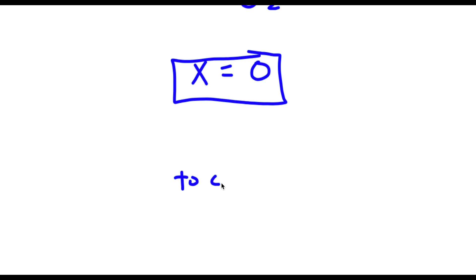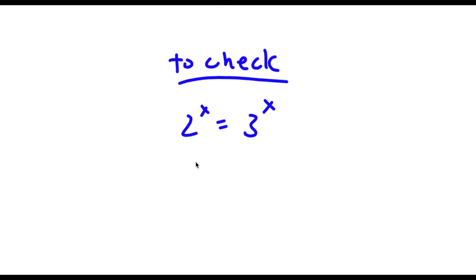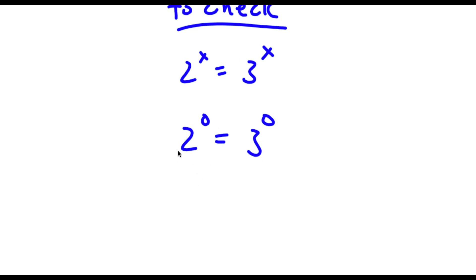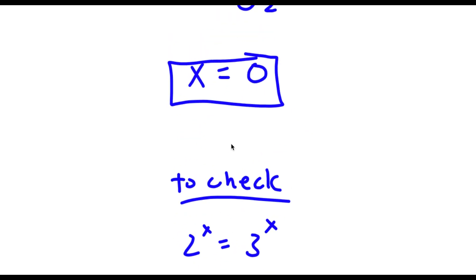Now to check: I have 2 to the power of x is equal to 3 to the power of x, and x equals 0. So I have 2 to the power of 0 is equal to 3 to the power of 0. Anything to the power of 0 is 1, so I have 1 is equal to 1. And because this is correct, our solution is correct as well.